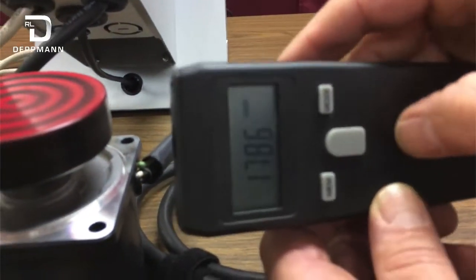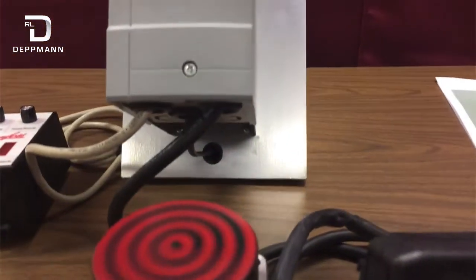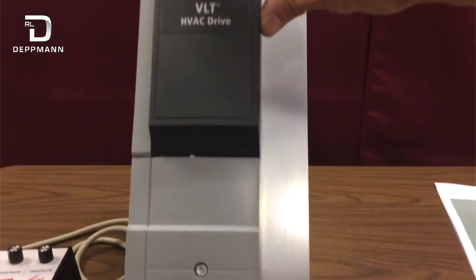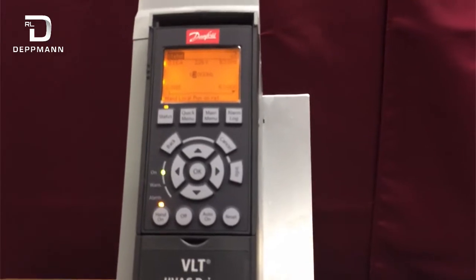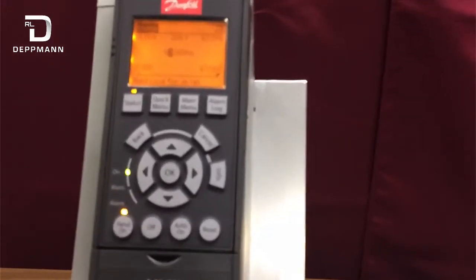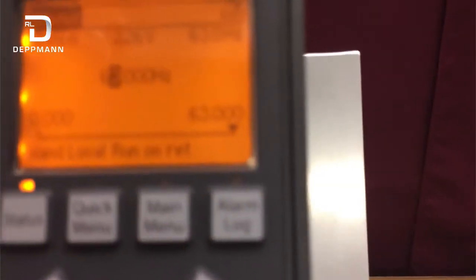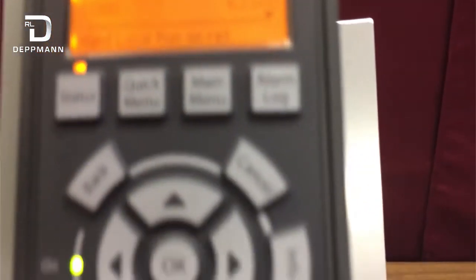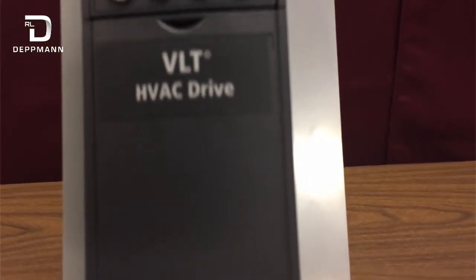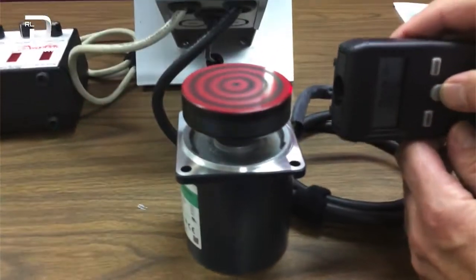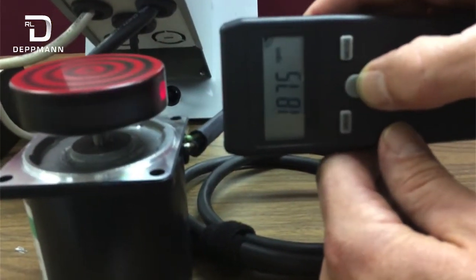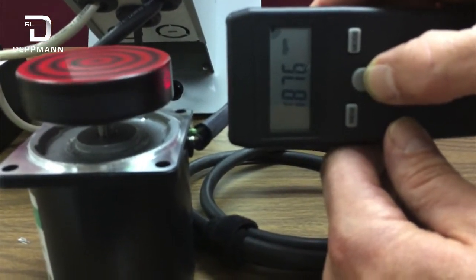Now I'm going to go back and go up just a little bit more to that new maximum that we set, 63 Hz. Now if we look at the motor running with our tachometer, we can see the speed is 1876.